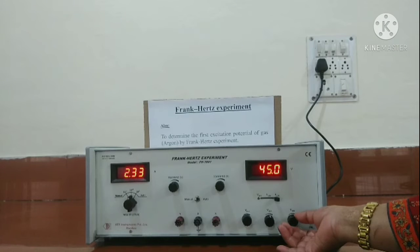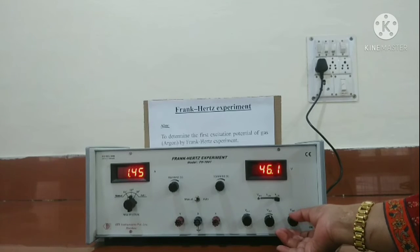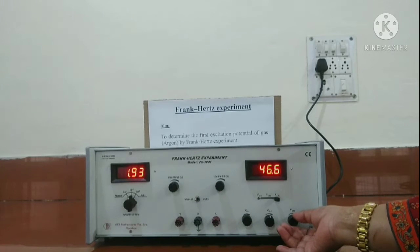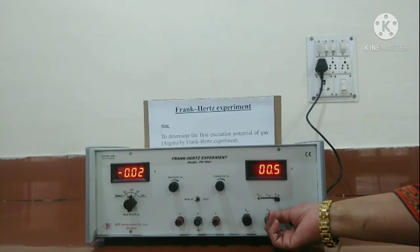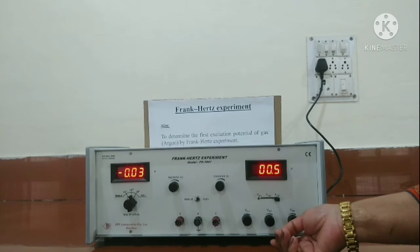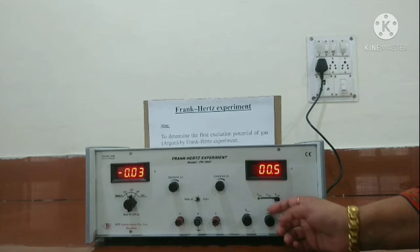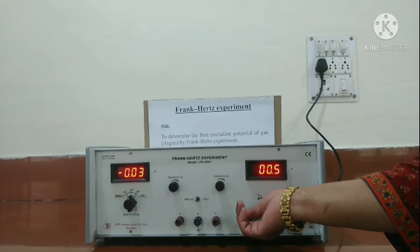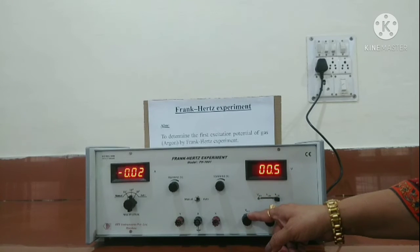What we do is we note down this data in a table and then we have to plot the graph. Now I want to share one precaution with you: whenever we want to switch off the device, we must ensure that all the knobs are at their minimum position. Check it and then only you can switch off the device.